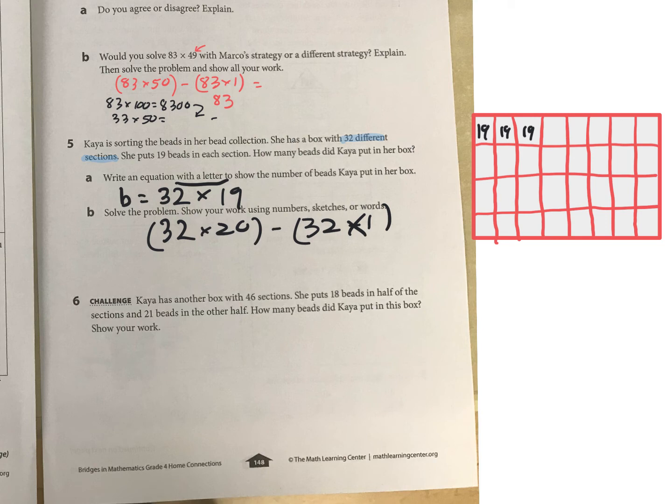And then now we have a challenge. Now she's got a new box, 46 sections, and she's putting that half and half. What you have to imagine here is can you split 46 in half? What is half of 46? You're gonna have two sections. Think about it - I'm thinking half of 40 is 20, half of 6 is 3, so there's gonna be 23 in each section. Then 18 in half and 21 in half, so you're gonna have 23 times 18 and then you're also gonna have 23 times the other section.